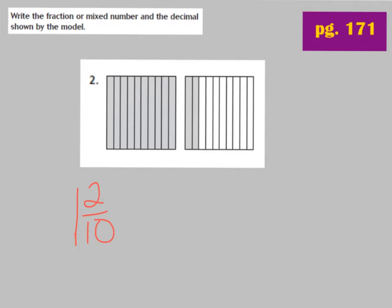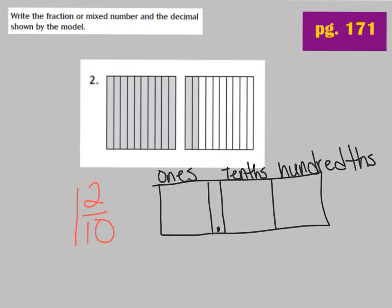Now let's write the decimal using a place value chart — go ahead and draw one also. I know that I have 1 whole, so I have 1 in the ones place. I have 2 out of 10 shaded, which means I have 2 tenths, so I need to put a 2 in the tenths place. My decimal is 1.2 — 1 and 2 tenths. Whenever I get to the decimal point, I say the word "and." 1 and 2 tenths.